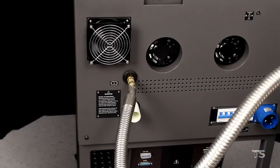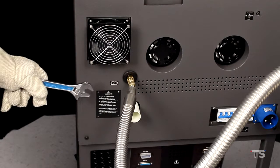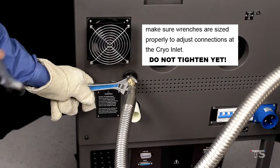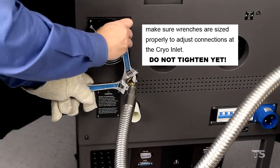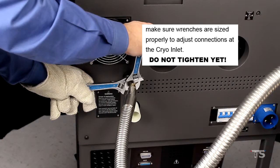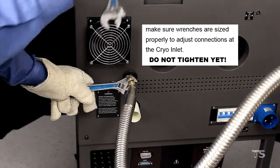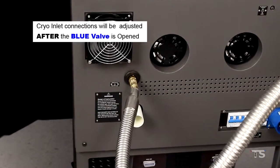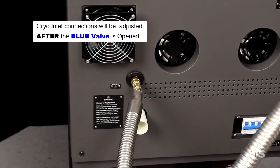Before we open the blue liquid valve and allow LN2 to flow to our thermal chamber, we need to make sure that our wrenches are sized properly to adjust the connections at the chamber's cryo inlet. We are not going to tighten the cryo inlet connections just yet. Hand-tight is what we need right now. But we will need to adjust the cryo inlet connections once the Dewar's blue liquid valve is opened.